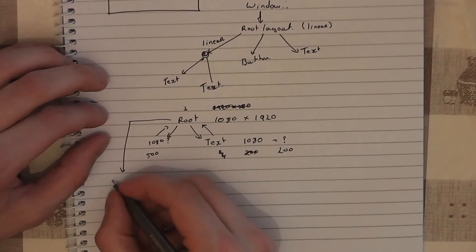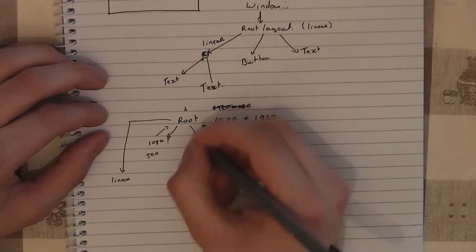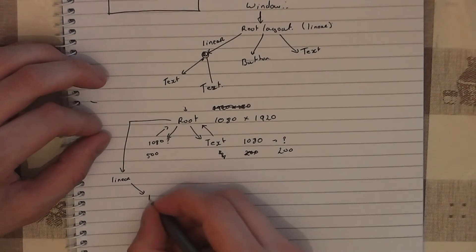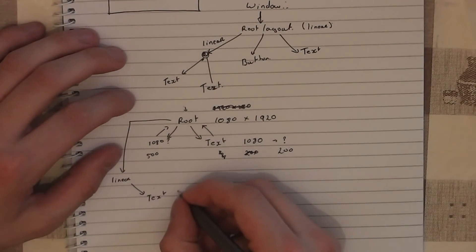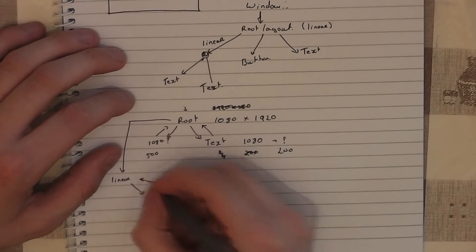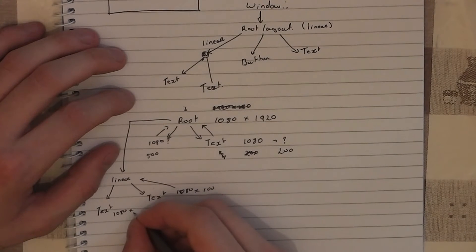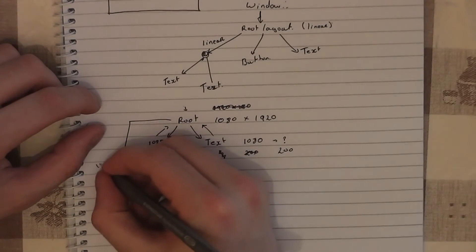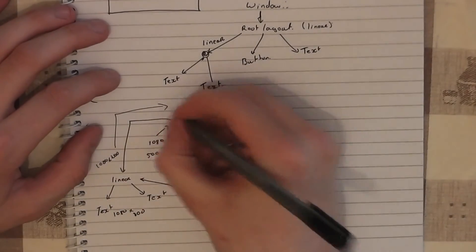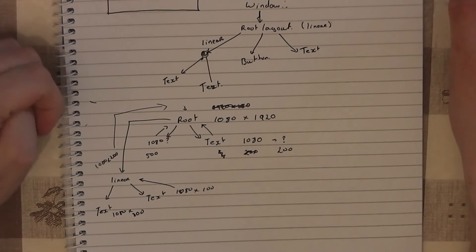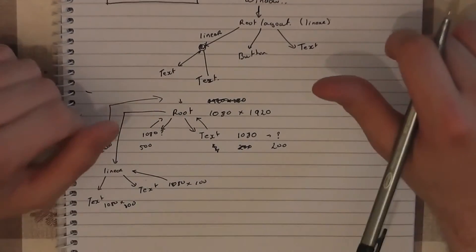The only problem is that if you have a nested linear layout, the root layout will ask it how big it wants to be — but the linear layout does not know yet. So the linear layout has to go in and ask its children. The first text says it wants to be 1080 by 100, and it reports back. Then the other view does the same — 1080 by 100. And then the linear layout reports back: I need 1080 by 200 space, because they're stacked underneath each other. That's the measure pass — it figures out how big the views need to be. It gets kind of complex when you factor in text sizes and spacing.